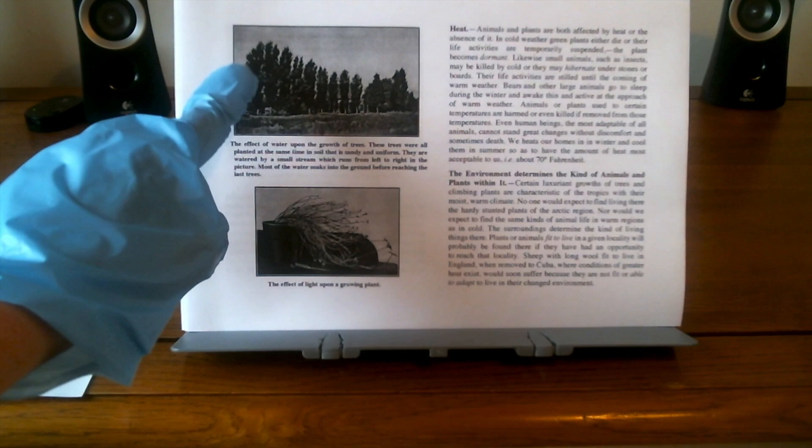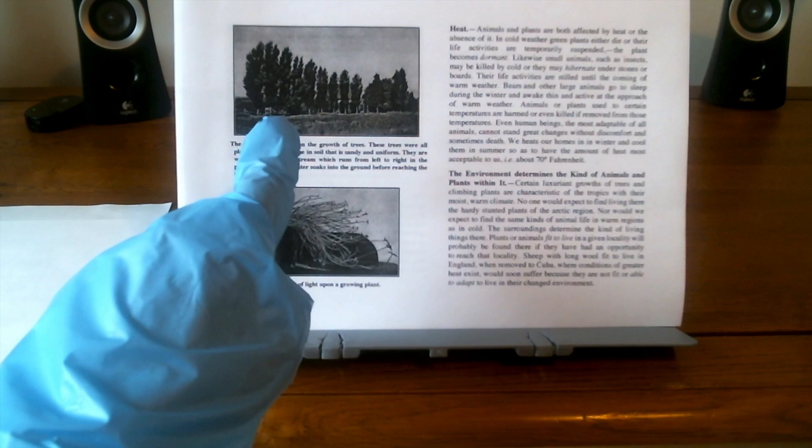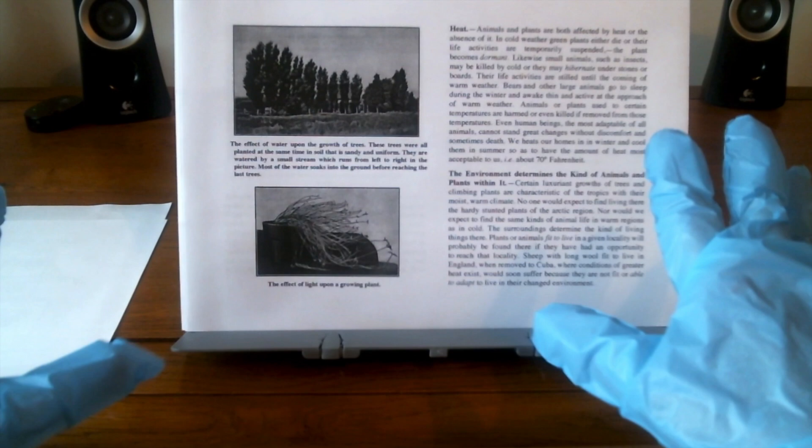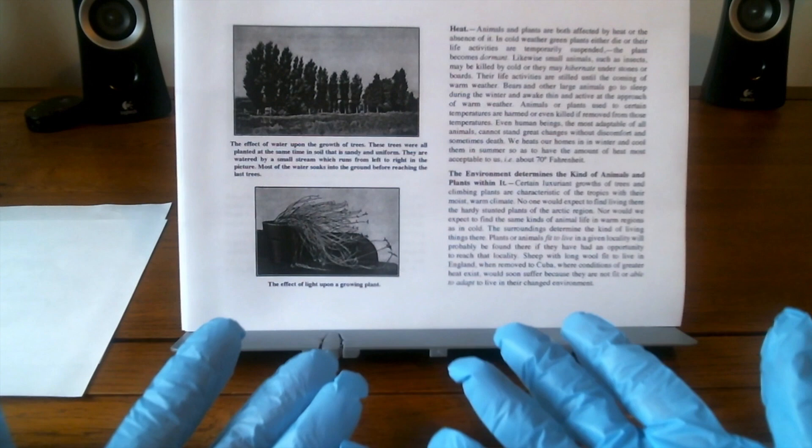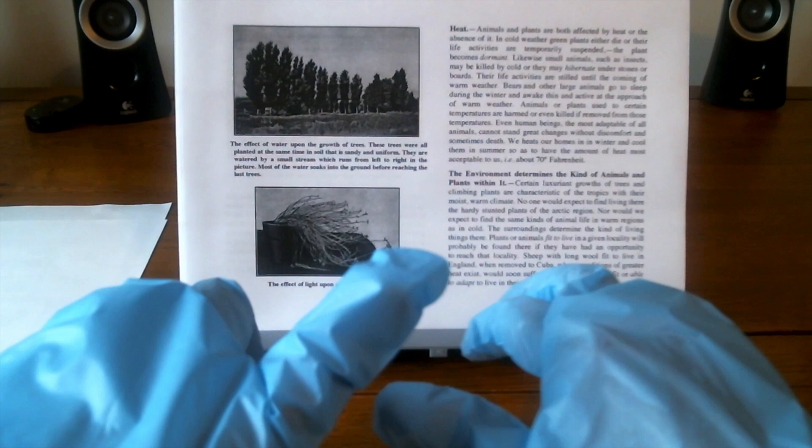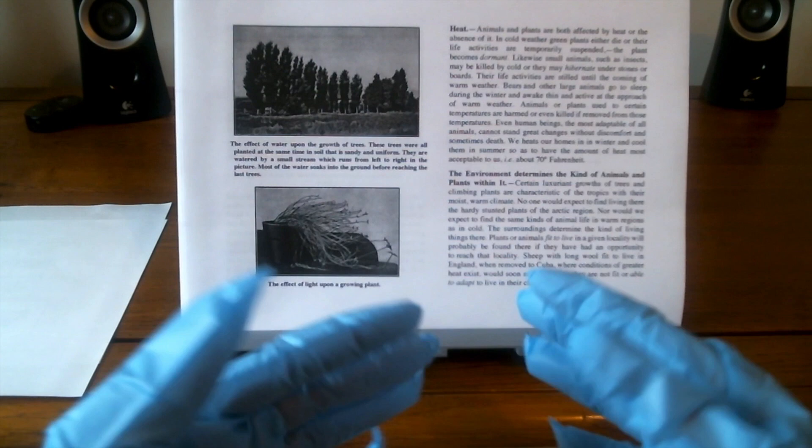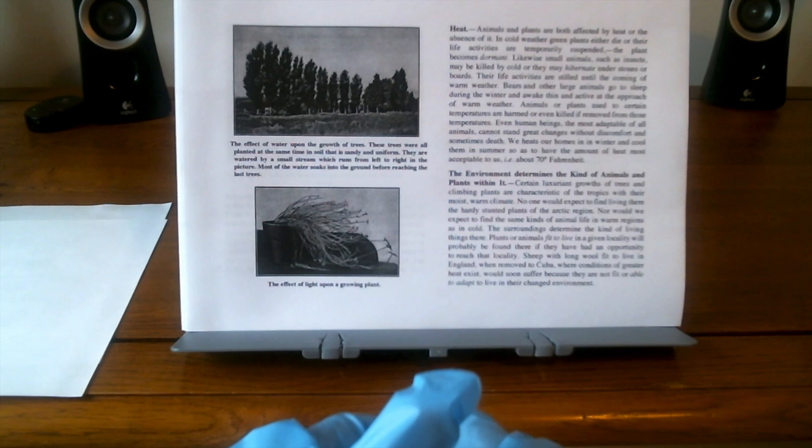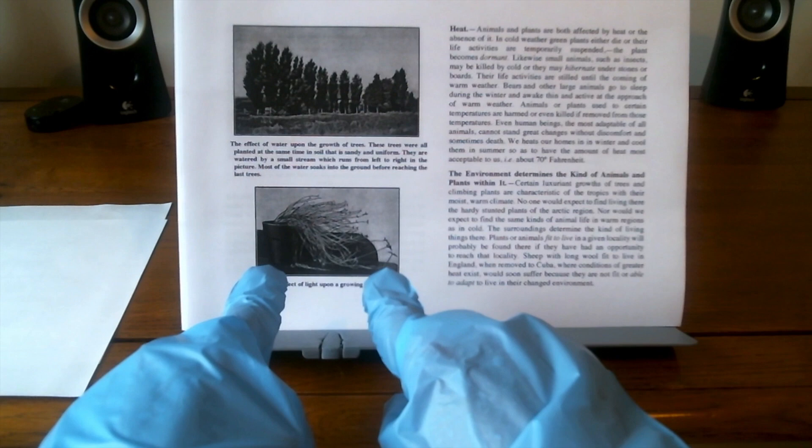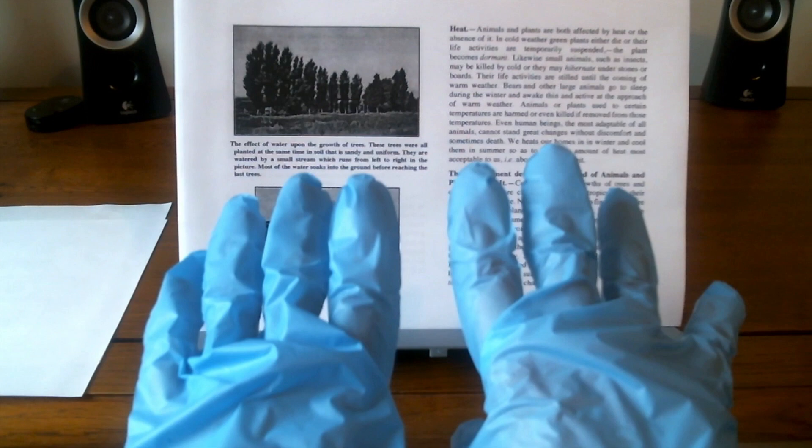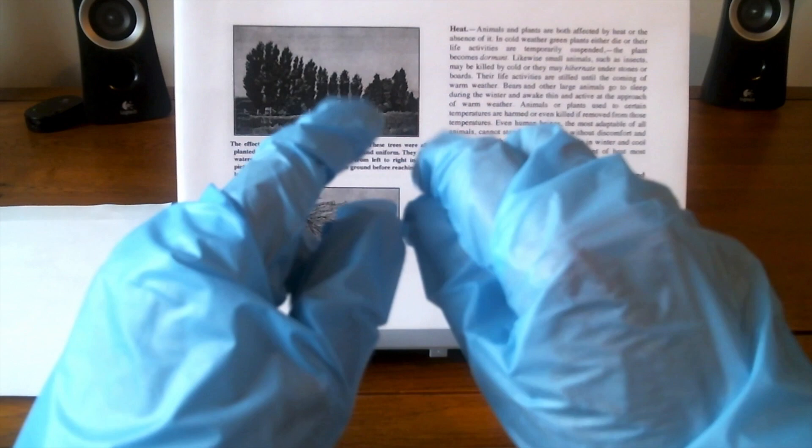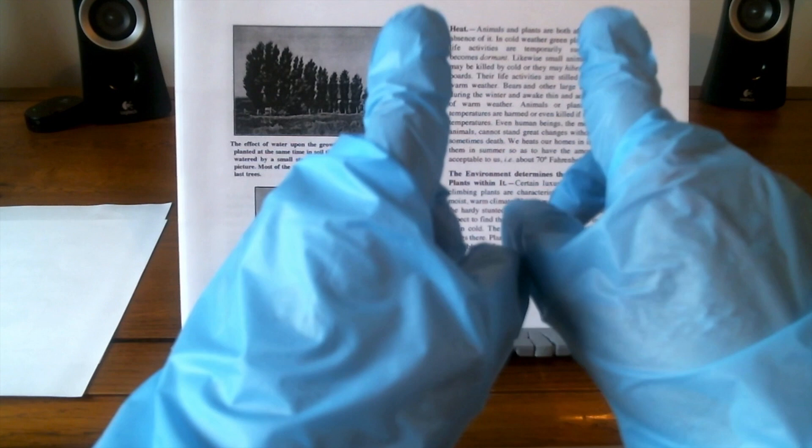In this illustration, we see the effect of water upon the growth of trees. These trees were all planted at the same time in soil that is sandy and uniform. They are watered by a small spring that runs from left to right, and most of the water soaks into the ground before reaching the last of the trees. And the next illustration, here we can see the effect of light upon a growing plant.